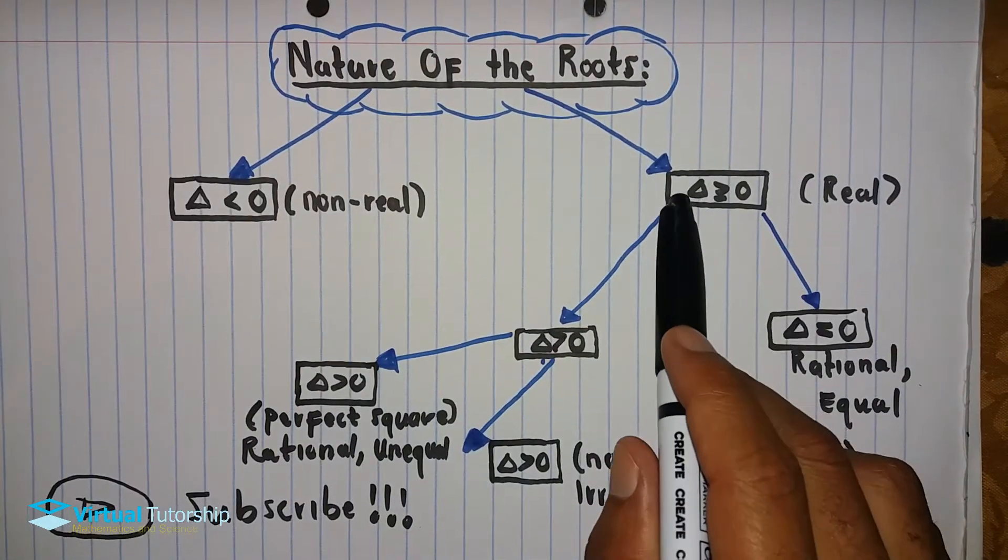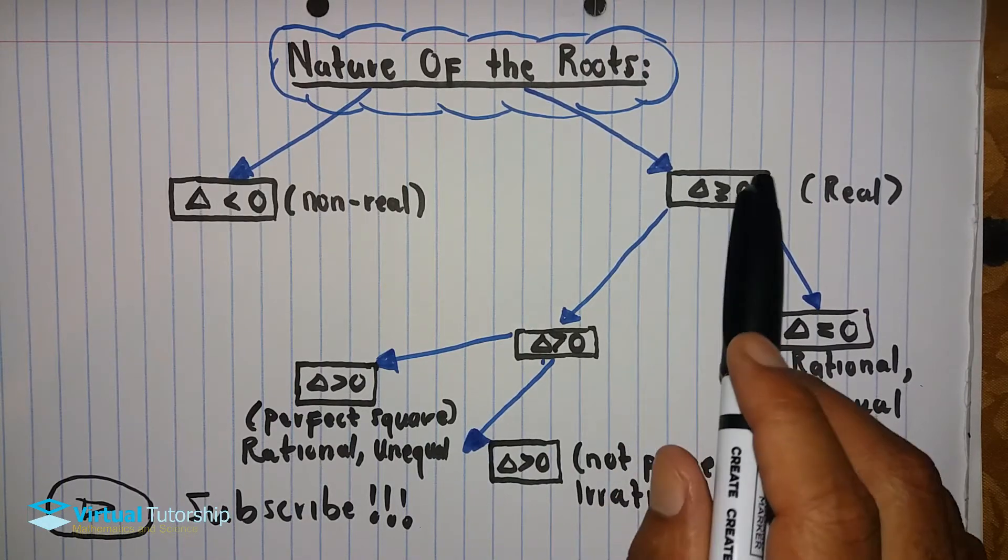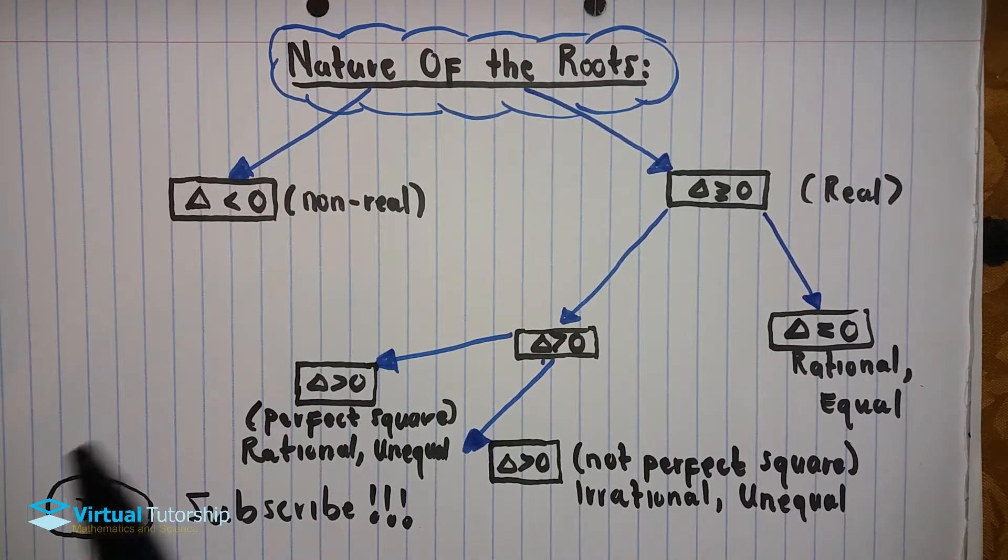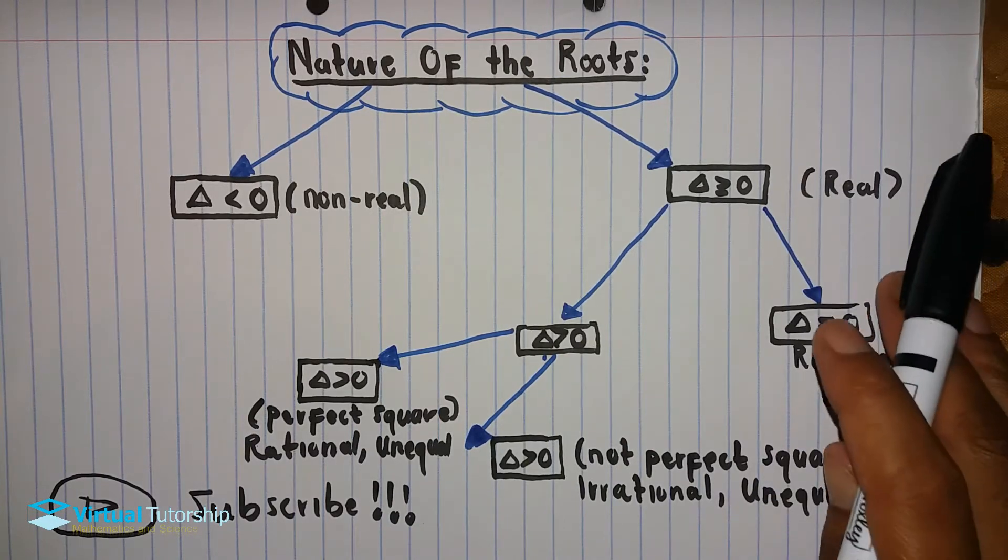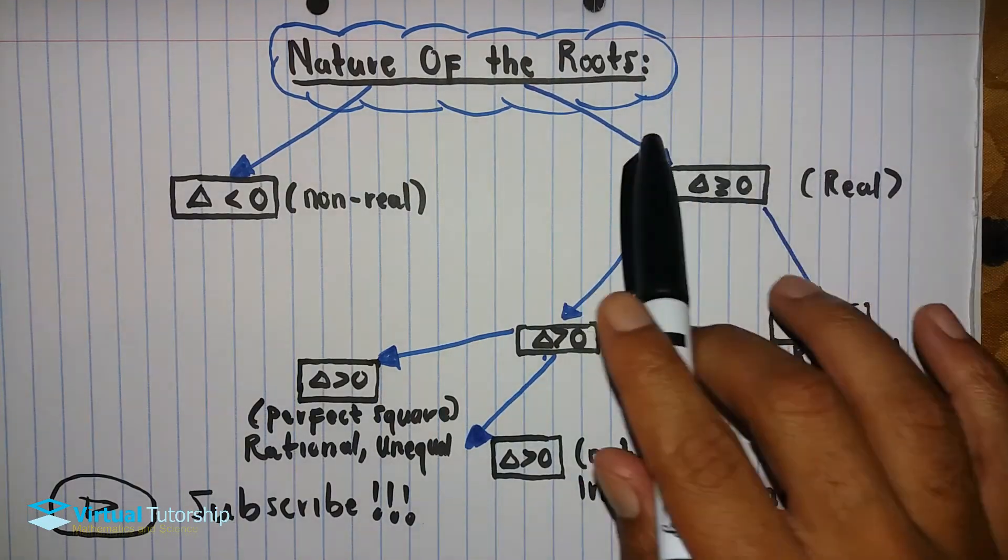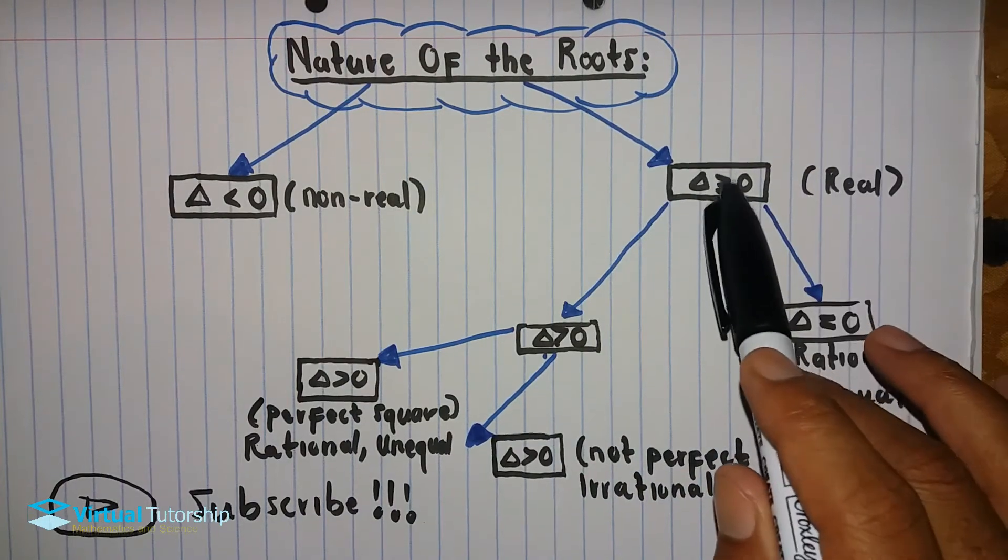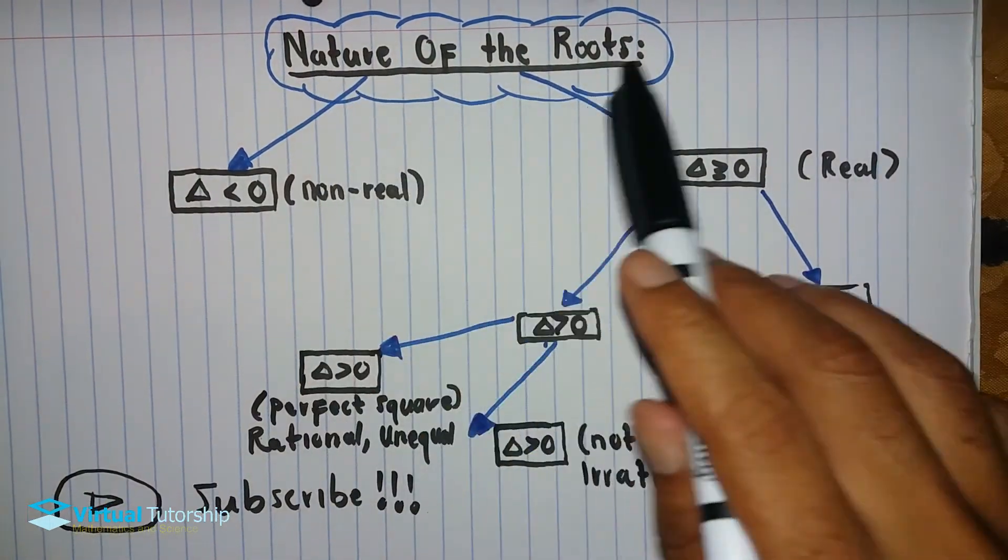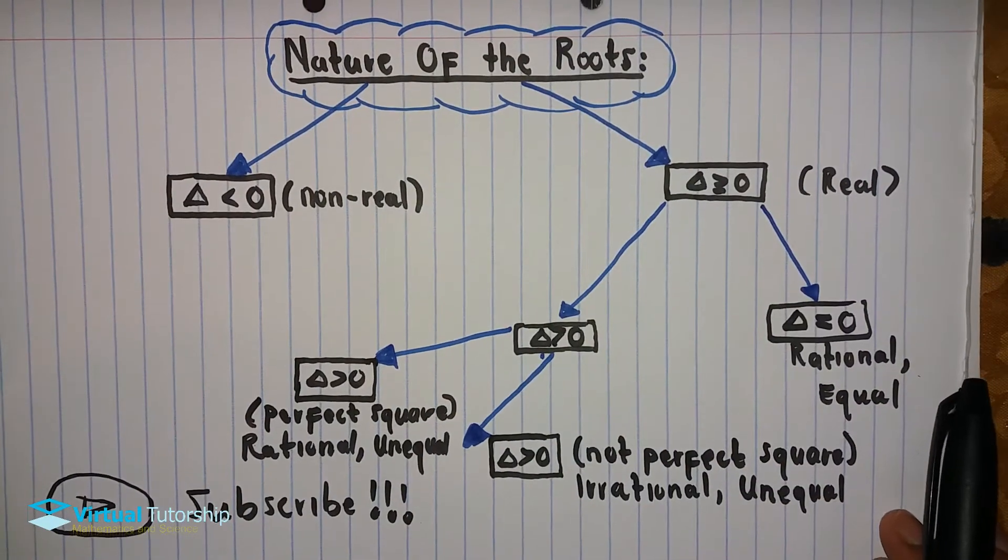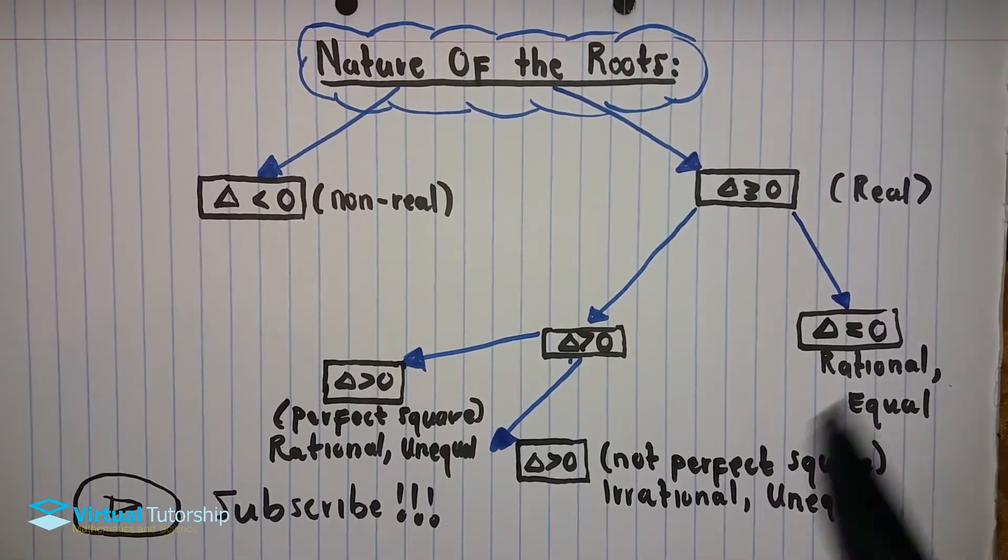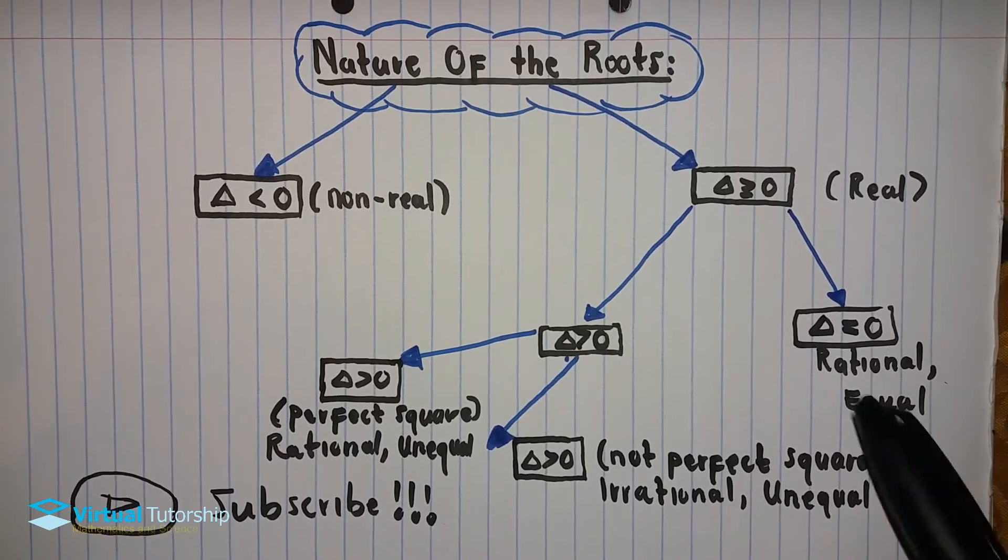Whenever delta is greater than zero or equal to zero, there is a real solution. There are more examples that stem from this branch of the nature of the roots. Just for now, this is like the mind map to summarize it.